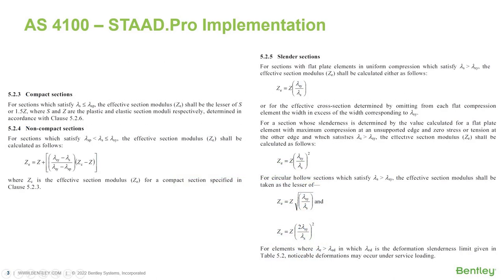In AS4100, steel sections are classified as compact, non-compact, or slender depending upon their local buckling characteristics. This classification is a function of the geometric properties of the section. The design procedures are different depending on the section class. STATPRO can determine the section classification with standard shapes and user-specified shapes, and the design is performed for all three categories of section classes.